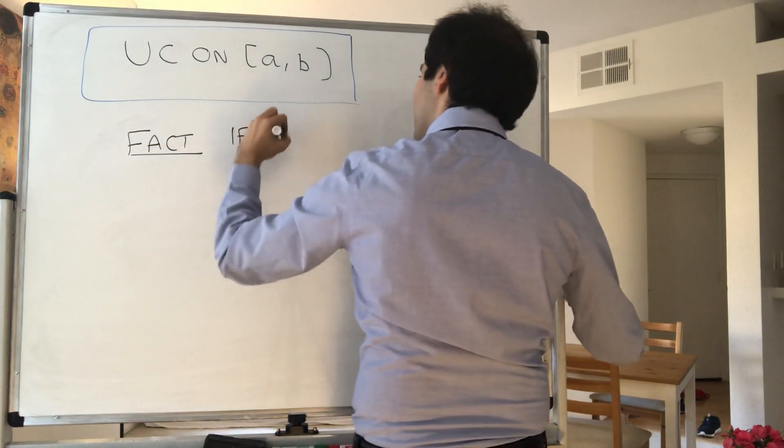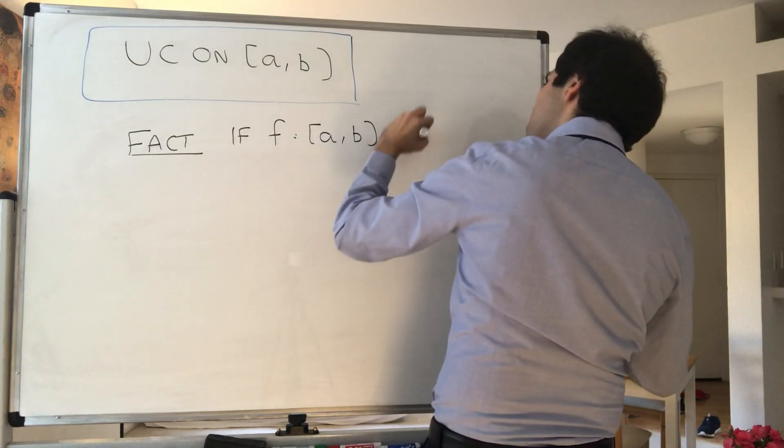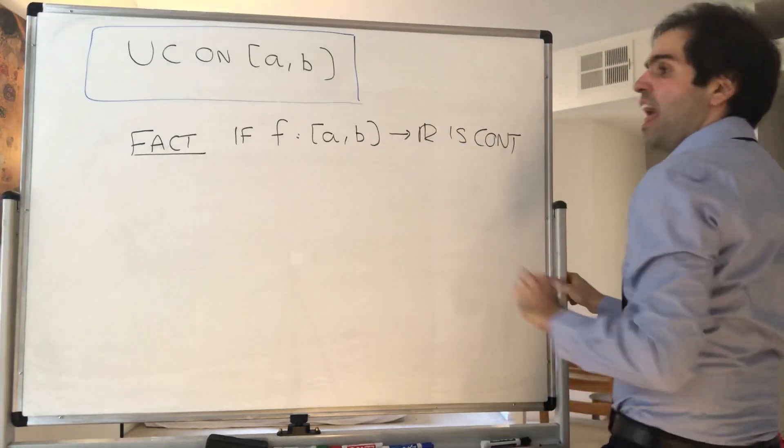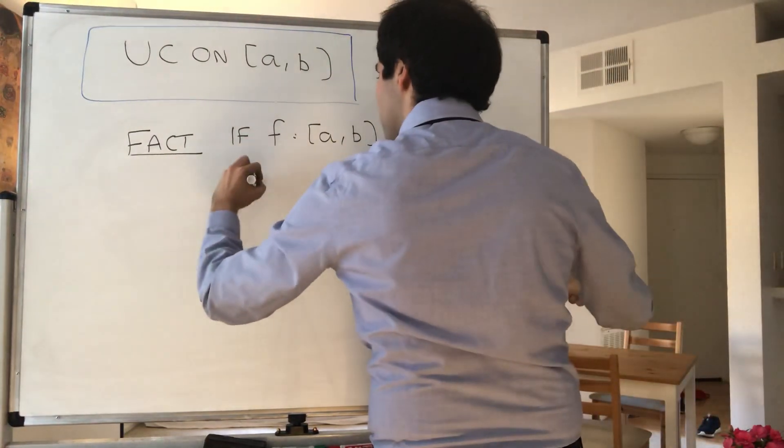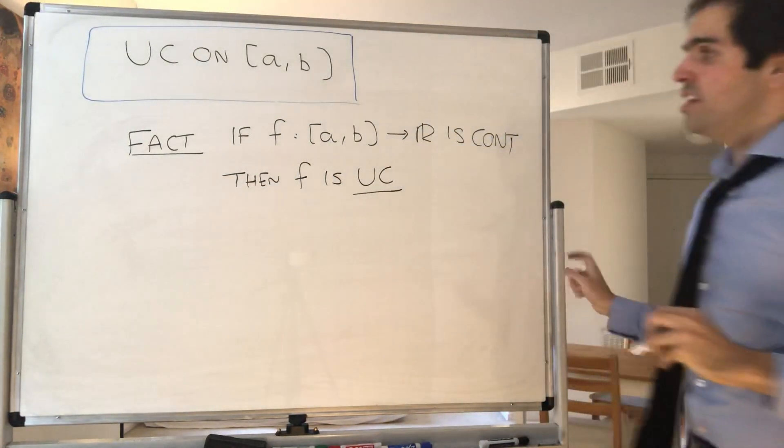namely if you have a continuous function on the closed interval [a,b], then it's uniformly continuous, which gives us a very nice test for uniform continuity. So fact: if f from [a,b] to ℝ is continuous, then f is uniformly continuous.